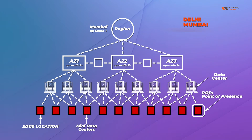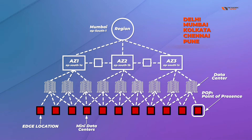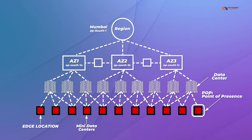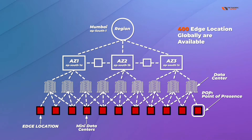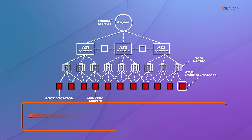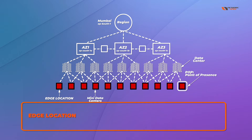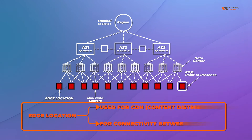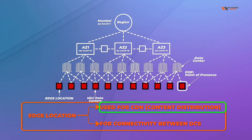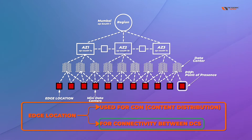Edge locations can also be used for content delivery network — distributing content globally in all major cities like Delhi, Mumbai, Kolkata, Chennai, Pune, and Bangalore. In total, more than 400 edge locations are available globally, and AWS is maintaining them. Edge locations are responsible for two main tasks: number one, content delivery or content distribution, and number two, connectivity between data centers.